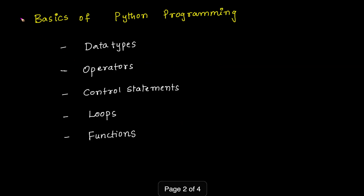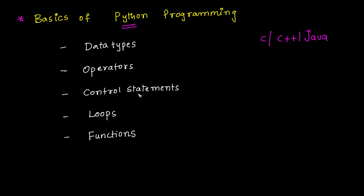The first module is the basics of Python programming. If you are going to learn any programming language — not only Python, but also C, C++, Java — first and foremost we should learn the basics. Under this, we need to learn what are the different data types available in Python and what are the different types of operators in Python.